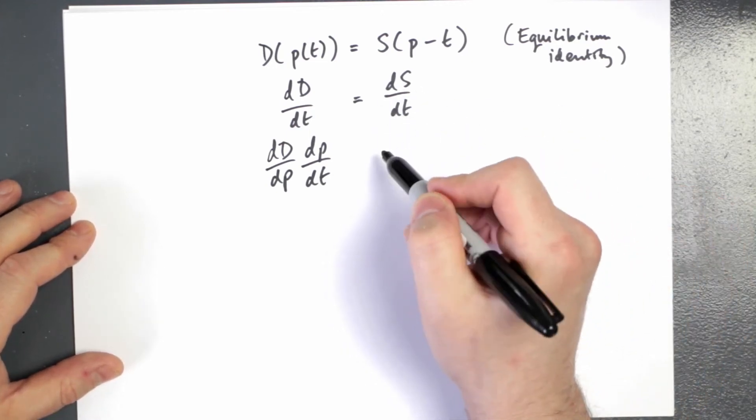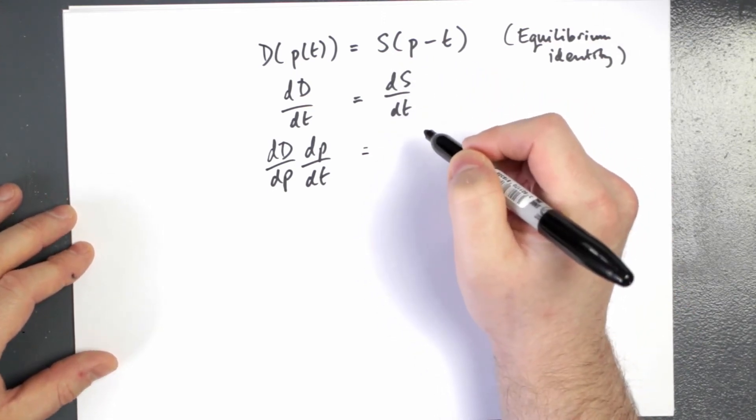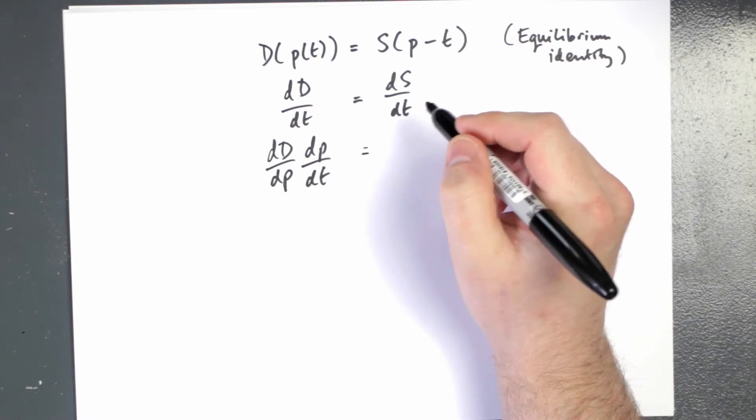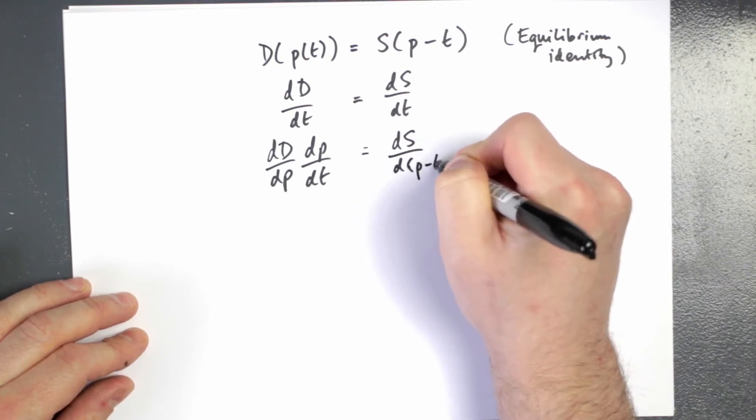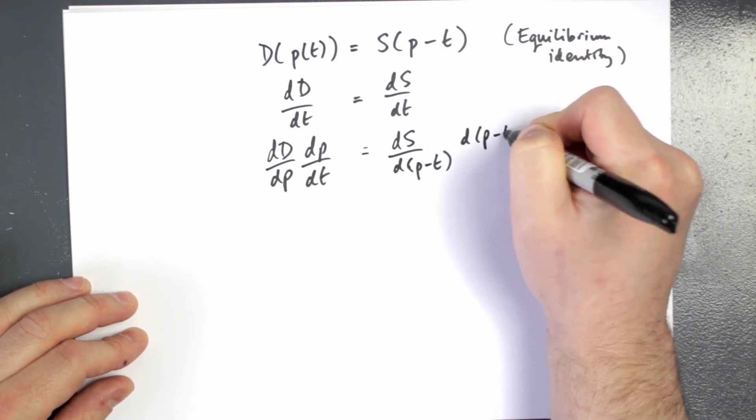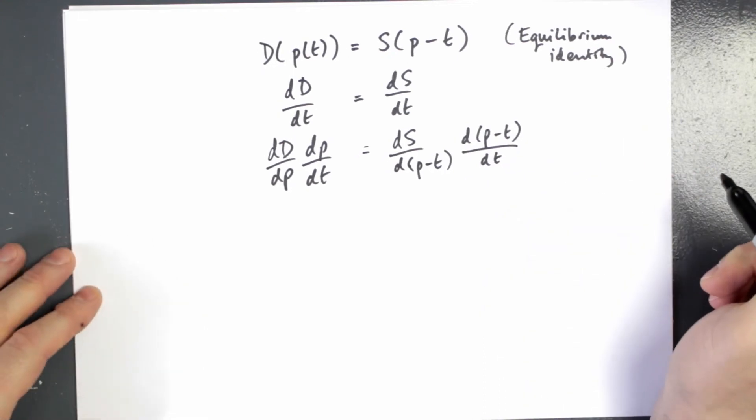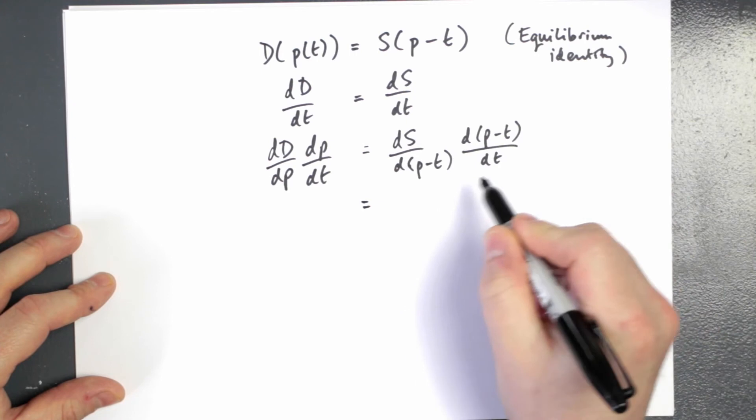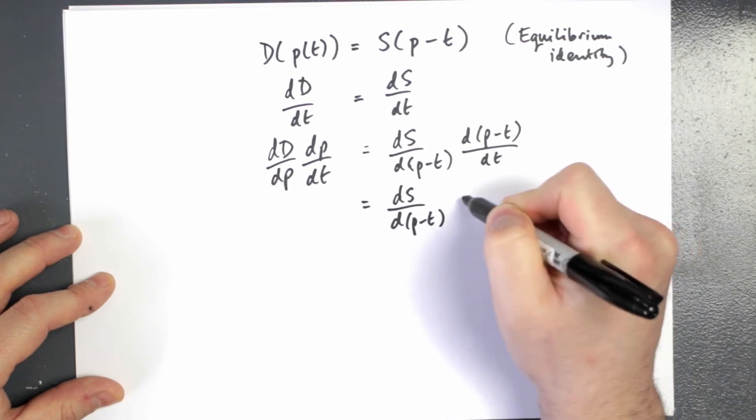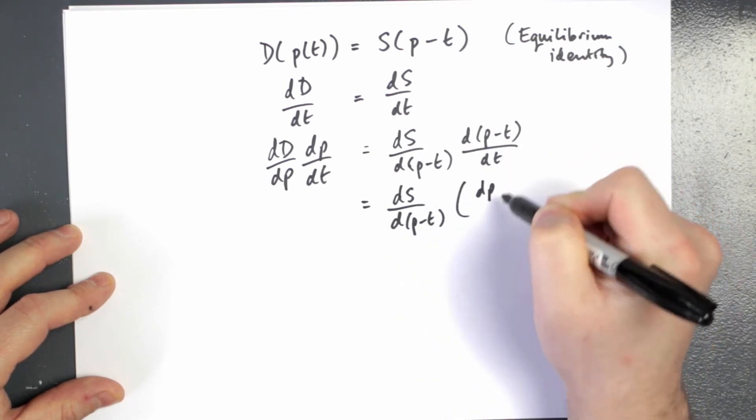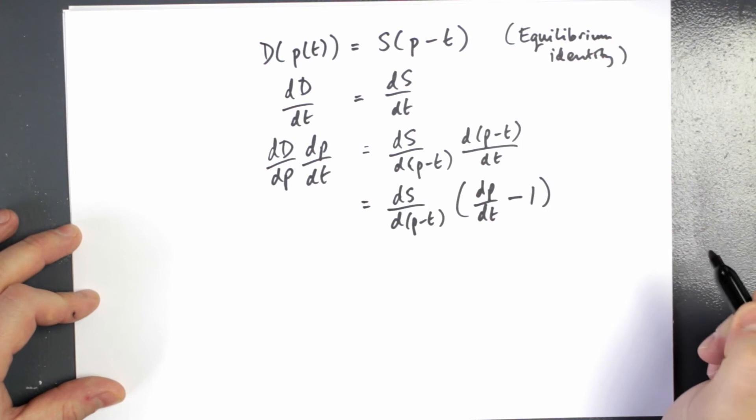What about this side here? Well, here we've got p minus t. So I could write this as the derivative of supply with respect to p minus t and then the derivative of p minus t with respect to the tax t. And I can clean this up a little bit and write the derivative of p minus t here. And then in brackets, I would have the derivative of price with respect to the tax minus the derivative of the tax with respect to itself, which would just be one.